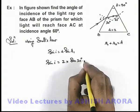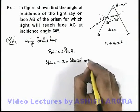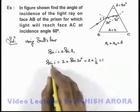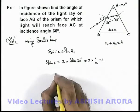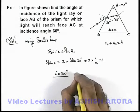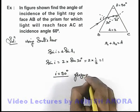On simplifying, we are getting 2 multiplied by 1/2, that is 1. So if sine i is equal to 1, we can see the value of i must be equal to 90 degrees, which is the case of grazing incidence.